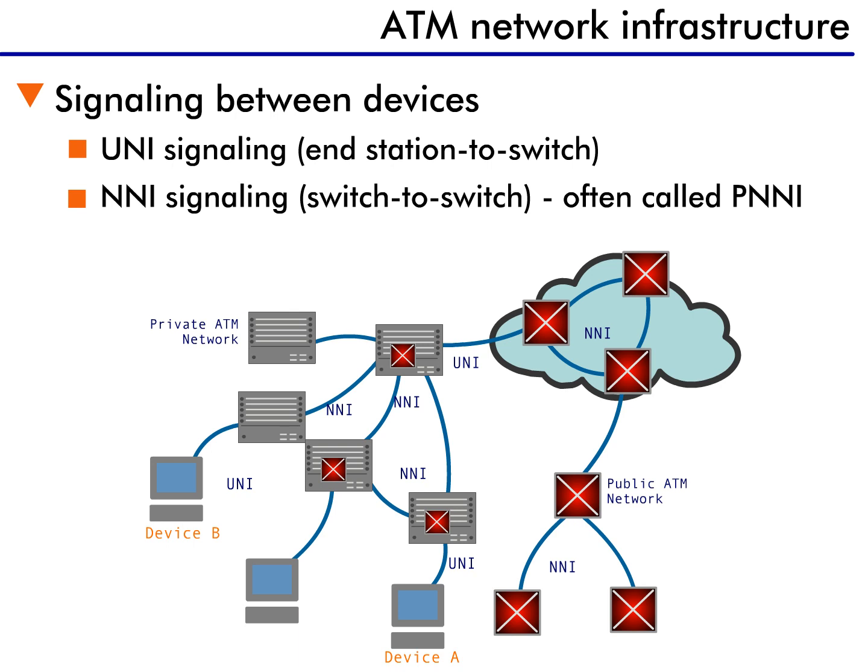ATM networks are different from the typical Ethernet network we have already discussed. For one thing, ATM uses special signaling between switches, and this is something not found in Ethernet. This signaling, or communication exchange between ATM devices, is ATM's way of sharing information across the network.